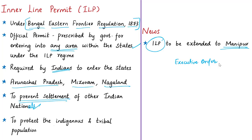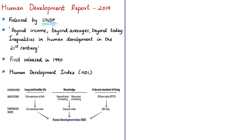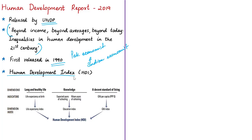The next article discusses the Human Development Report 2019 released by the United Nations Development Programme (UNDP). The report is titled 'Beyond Income, Beyond Averages, Beyond Today: Inequalities in Human Development in the 21st Century.' First released in 1990 by Pakistani economist Mahbub ul Haq and Indian economist Amartya Sen, the report is released annually and includes indices such as the Human Development Index (HDI), Inequality-Adjusted HDI (IHDI), and Gender Inequality Index (GII).